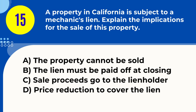Question 15. A property in California is subject to a mechanic's lien. Explain the implications for the sale of this property. A. The property cannot be sold B. The lien must be paid off at closing C. Sale proceeds go to the lien holder D. Price reduction to cover the lien. Answer: B. The lien must be paid off at closing. Explanation: A mechanic's lien on a property must typically be paid off at closing, affecting the sale proceeds and negotiations.